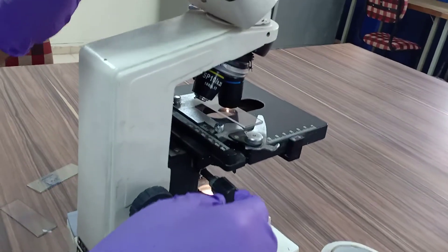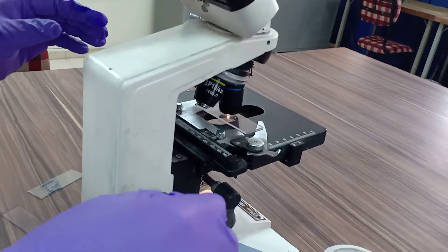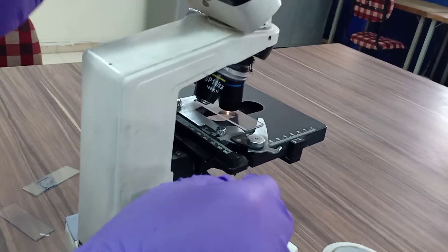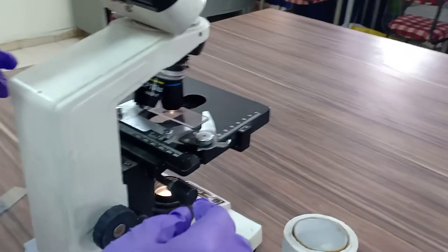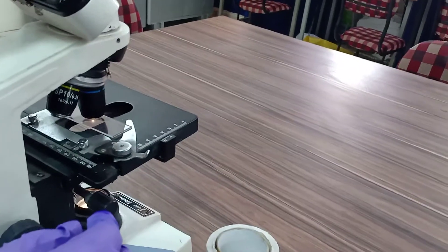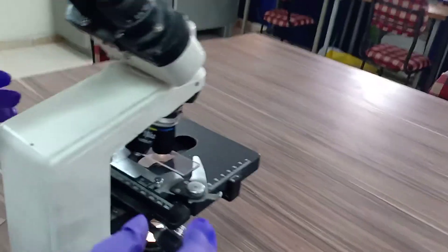You have to observe in the microscope. If the stain taken by bacteria is violet in color, it means it is gram-positive. If the stain taken by bacteria is reddish in color, then it is gram-negative.